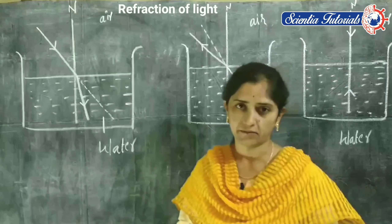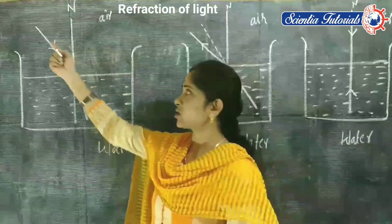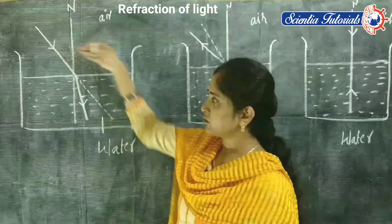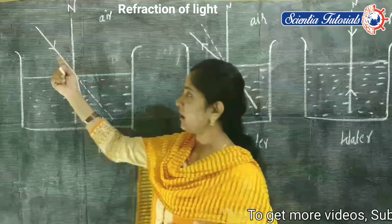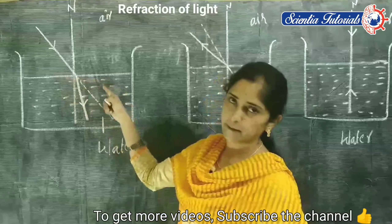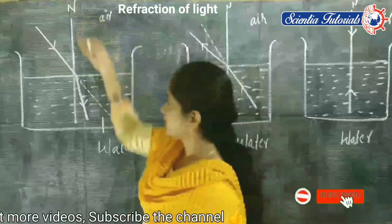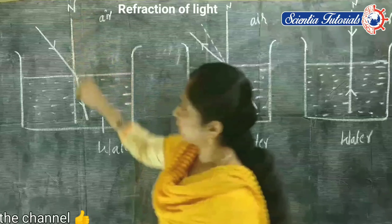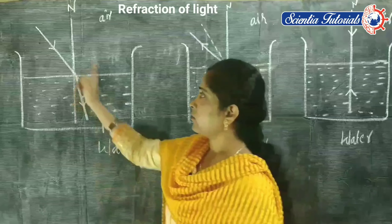Let me take one example. Here we have a light ray traveling from air to water. This light ray is called the incident light ray. After it is incident on a particular point of the denser medium, we draw a perpendicular line at that point called the normal, where the light has been incident.